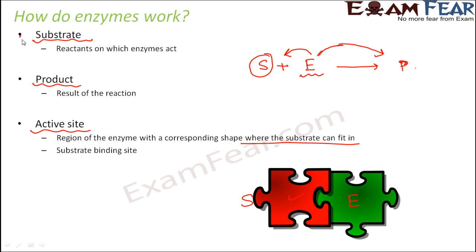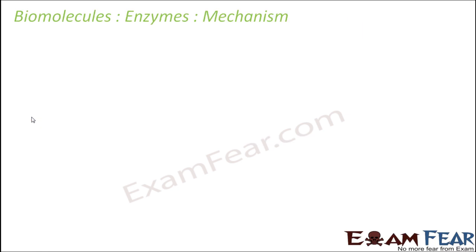So please remember that it is not the case that any substrate can combine with any enzyme. One enzyme is meant for a particular substrate, and that is how the active site of the enzyme is designed — only that substrate can come and join with it. Now we will try to understand the mechanism by which an enzyme increases the rate of reaction while remaining the same.